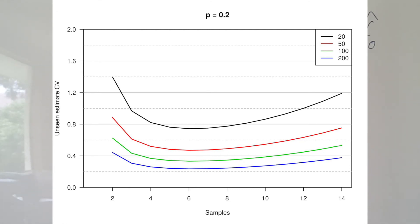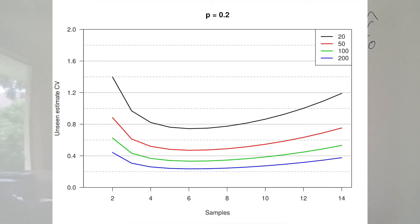When that capture probability is again about 0.2, our coefficient of variation is minimized when we have six samples from our population, and that's irrespective of the population size. Whereas if we have a capture probability of 0.4, that minimum shifts a little bit, it's reduced, it's around about three samples.